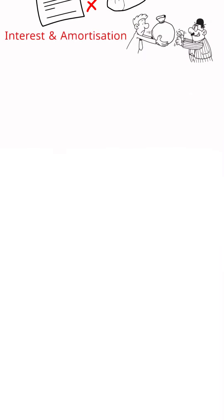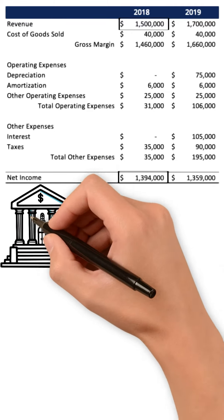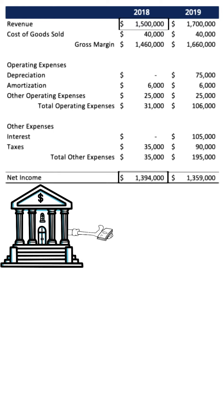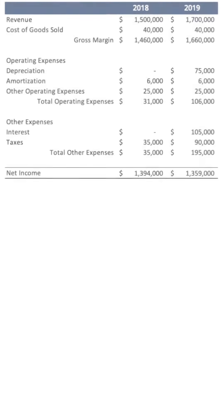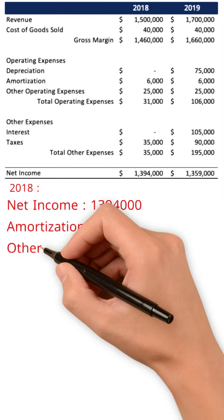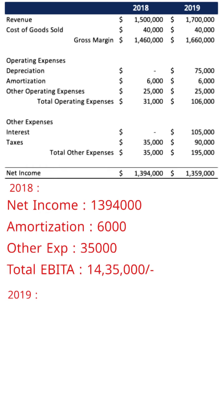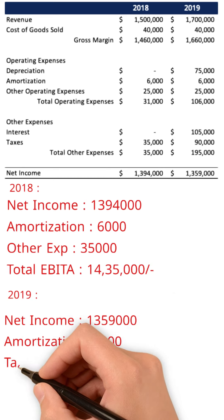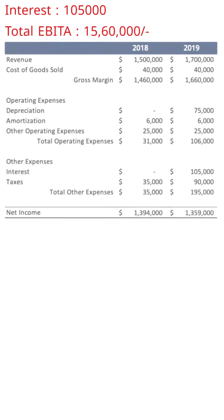Let's understand this with one example. This is the financial statement of a company. Its total revenue in 2018 was 15 lakh and net income was 13,94,000. The company took a loan to buy inventory to increase revenue, reporting 17 lakh in 2019, but net profit reduced to 13,59,000. EBITDA for 2018 equals 13,94,000 plus 6,000 plus 35,000, which is 14,35,000. For 2019 it equals 13,59,000 plus 6,000 plus 90,000 plus 1,05,000, which is 15,60,000.